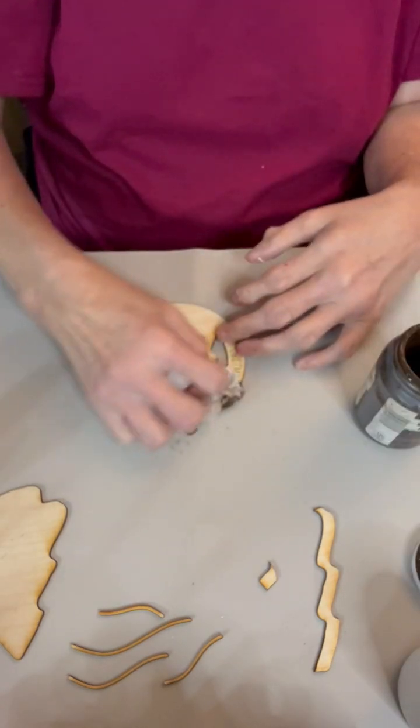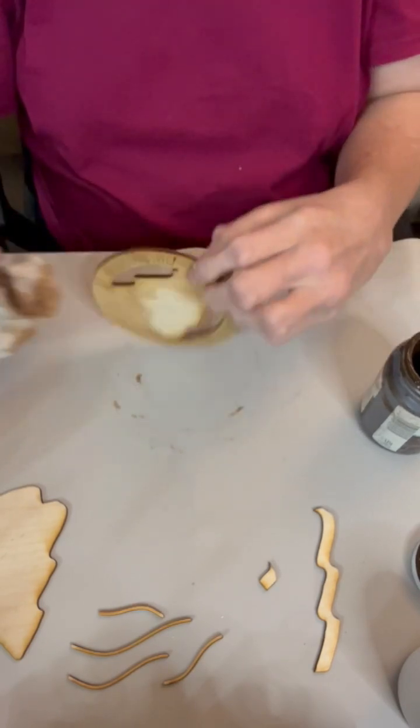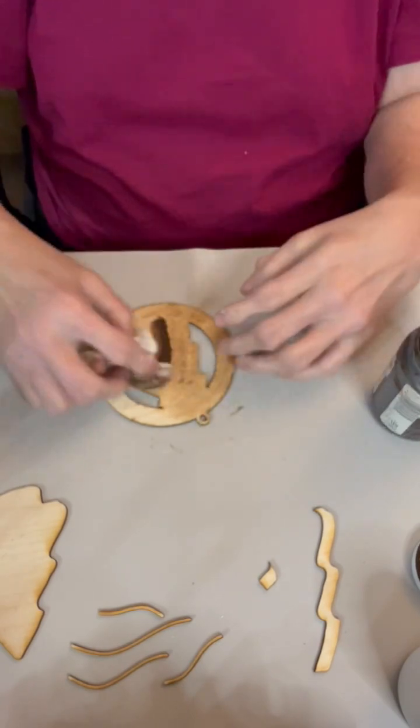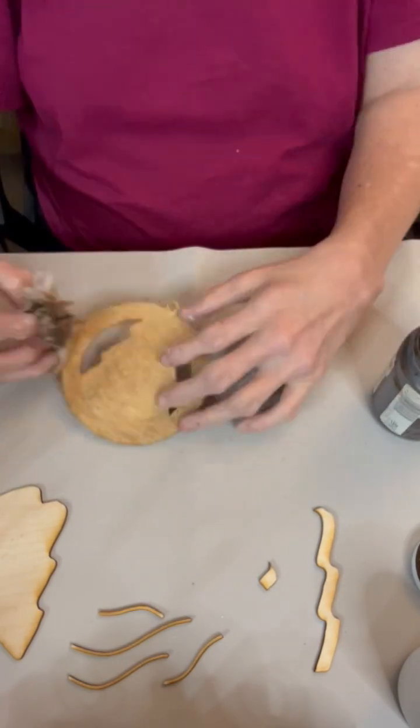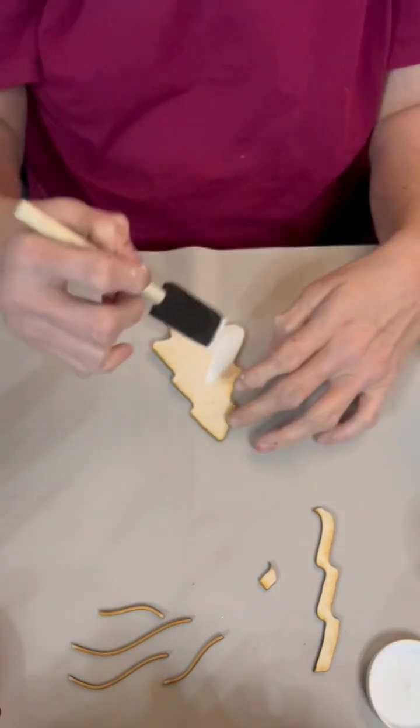So I started by giving the base of this ornament a coat of antique wax, both front and back, just to give it a finished look so that the Christmas tree will stand out better.